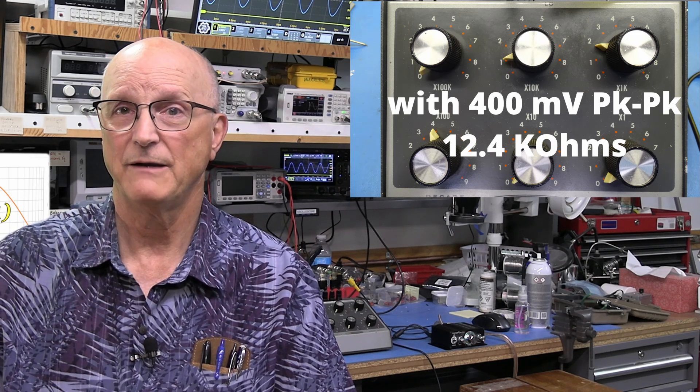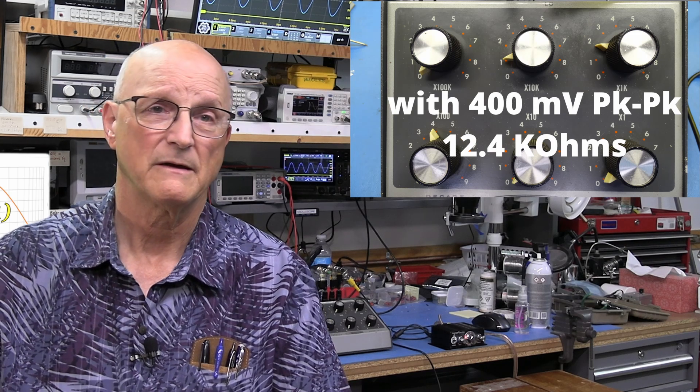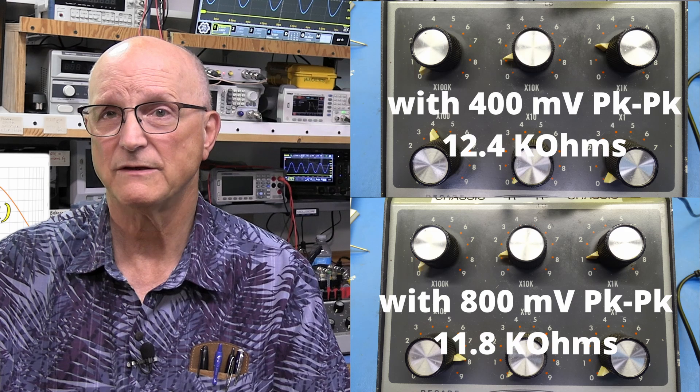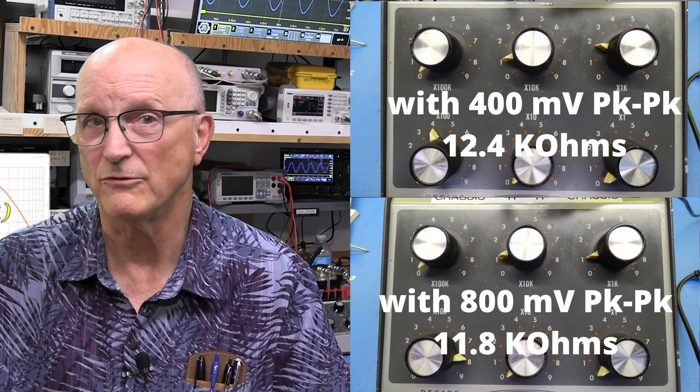Okay, so what about with the volume control all the way up? Well, with the 400 mV source, I got an input impedance of 12.4 kOhms. With the 800 mV source, I got an input impedance of 11.8 kOhms.